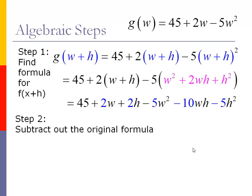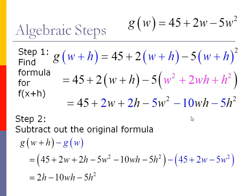Step number two now is to take the formula we've got and we'll subtract out the original formula. I'm taking the result that I got from up here, that algebra work, and then I'm subtracting the original formula. And as you can see, the 45s will cancel out, the 2w's cancel out, and the 5w squares cancel out, just leaving us a nice 2h minus 10wh minus 5h squared. So now we have what the numerator is for our difference quotient.